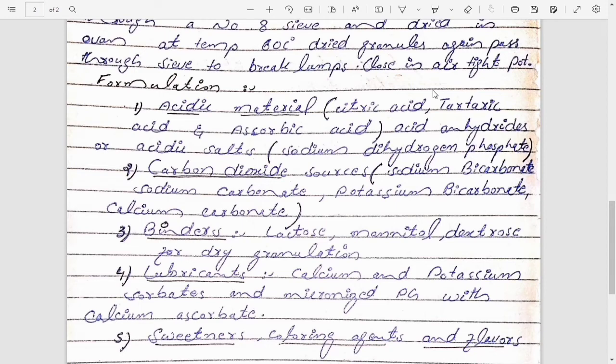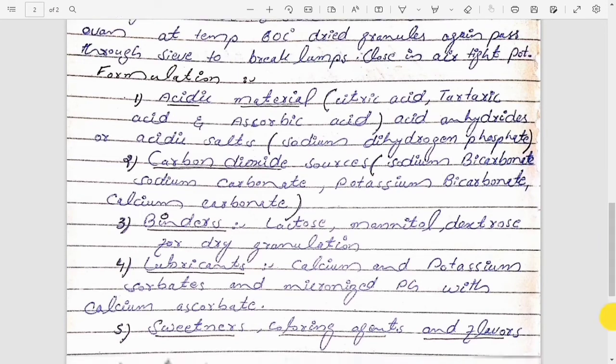Formulation: what acidic material? In acidic material we have citric acid, tartaric acid, ascorbic acid. And in carbon dioxide source we have sodium bicarbonate, sodium carbonate, potassium bicarbonate, and calcium carbonate. And as a binder we can add lactose